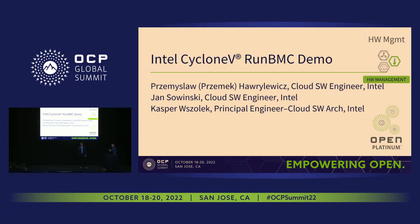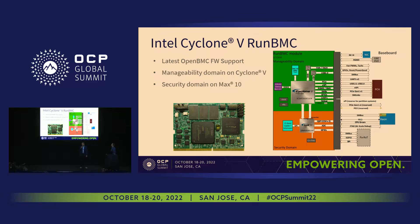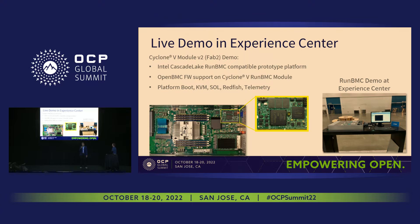We have DCSEM and RunBMC demos that we are showing there. The first one is the Intel Cyclone 5-based RunBMC module. It's a full BMC solution based on FPGA SOC, where we run the complete OpenBMC firmware stack, exactly the same as on the BMC ASIC stacks. We have also the security domain handled by an additional Max10 device on this module. And we have a fully integrated server platform called Seal Harbor — it's a Cascade Lake system, a dual node system with two RunBMC modules. We call it an ephemeral storage system. It's a fully redundant solution that has no single point of failure.